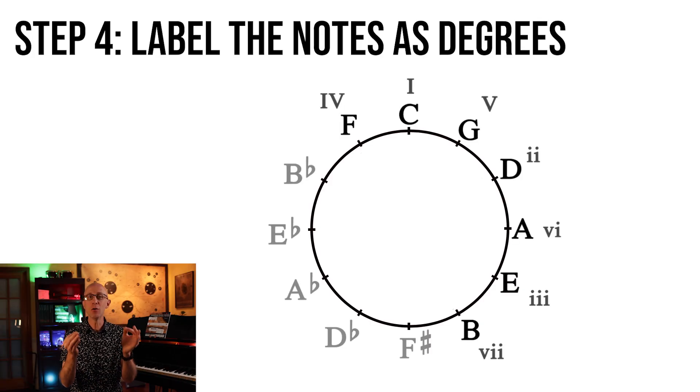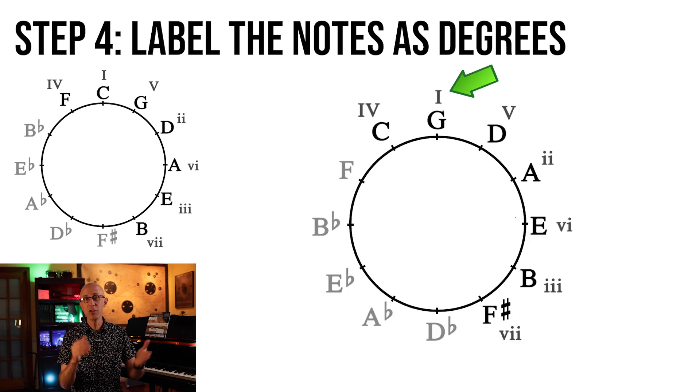Step 4: Label the notes as degrees. So C is the 1, D is the 2, E is the 3, F is the 4, G is the 5, A is the 6, and B is the 7. The cool thing is that these labels are the same for every key. In the key of G, G is the 1, and D is the 5, and A is the 2, and so on. So once you know where these labels go, you'll never have to change them ever again.